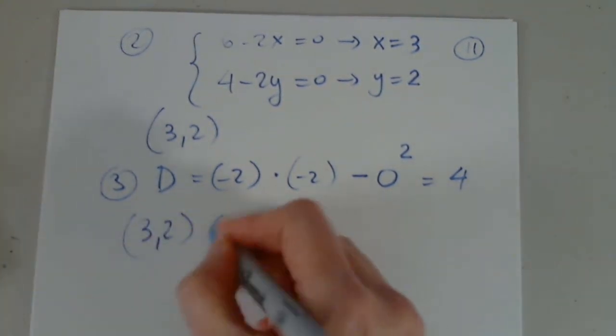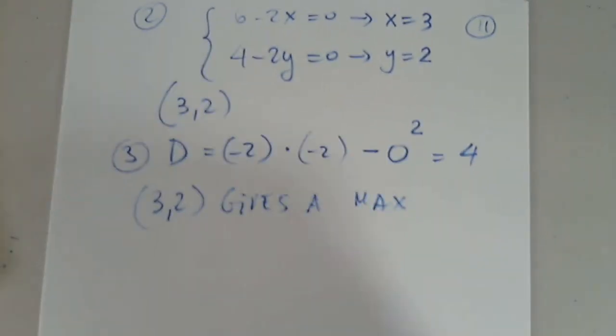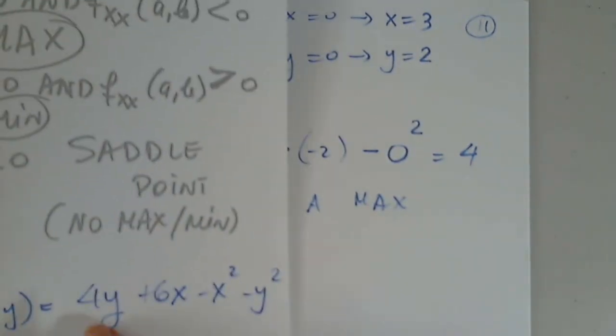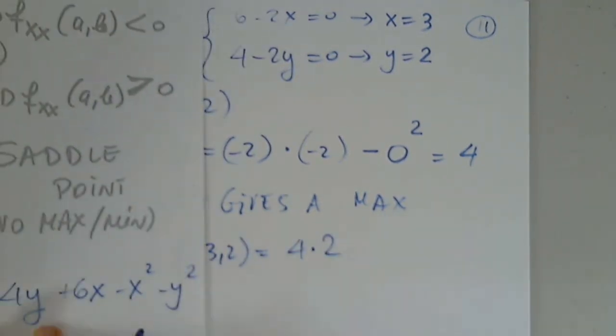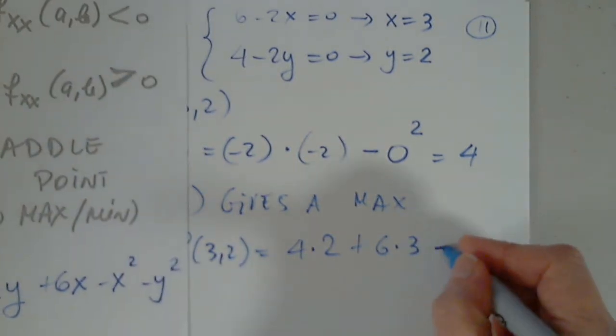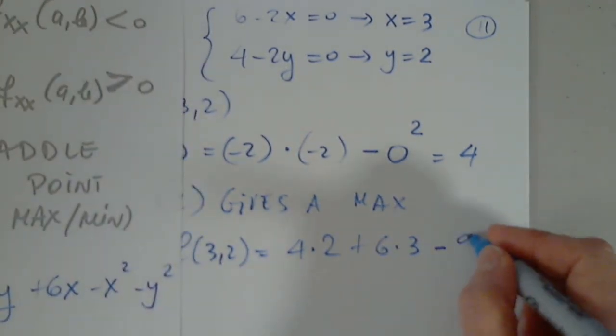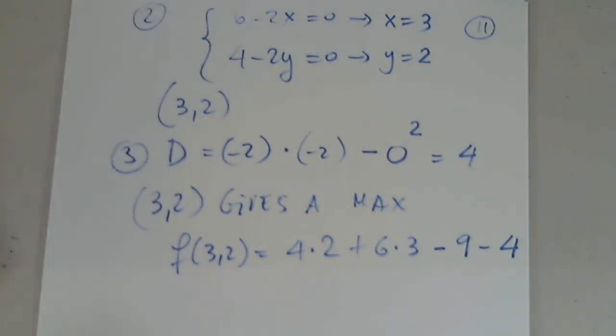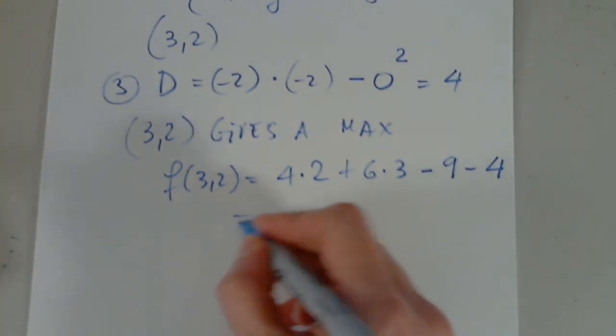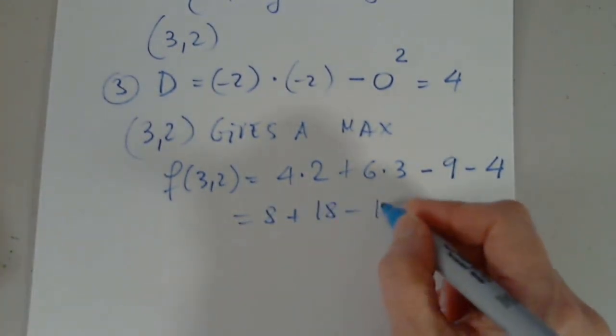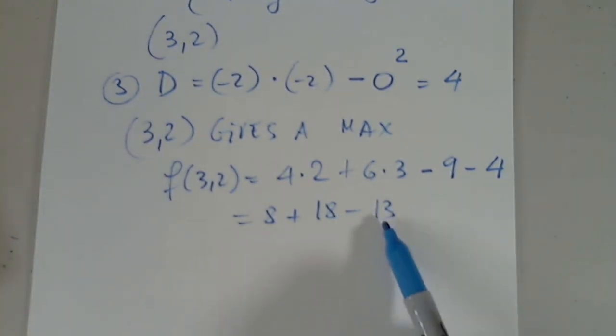So 3, 2 gives a max. What is it? No problem. I can find it. I'll tell you what it is. f of 3,2 will be 4 multiplied by 2 plus 6 multiplied by 3 minus 3 squared, which is 9, minus 2 squared, which is 4. So I get 8 plus 18 and minus 13. 18 minus 13 is 5. 5 plus 8 is 13. And that is the maximum. Relative maximum, of course.